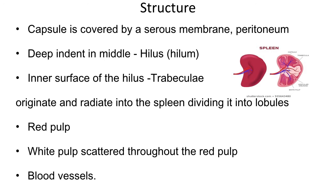The spleen is covered with a capsule, and the capsule has an outermost covering which is a serous membrane called the peritoneum. The shape of the spleen is like a fist of the human and the size is also the size of a fist. There is a deep indent in the middle portion of the spleen referred to as the hilum. Through the hilum, the blood vessels enter and leave the spleen.